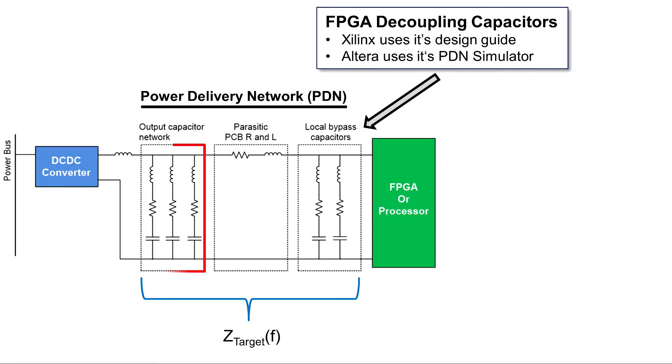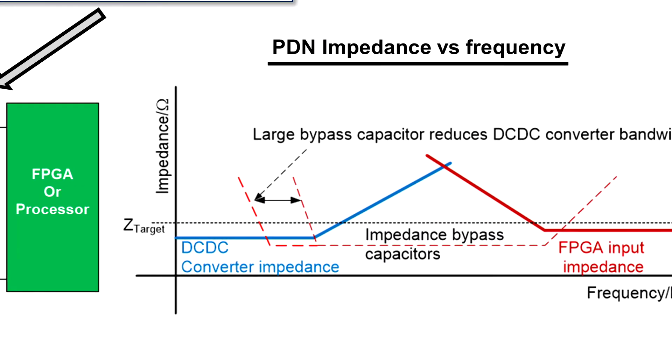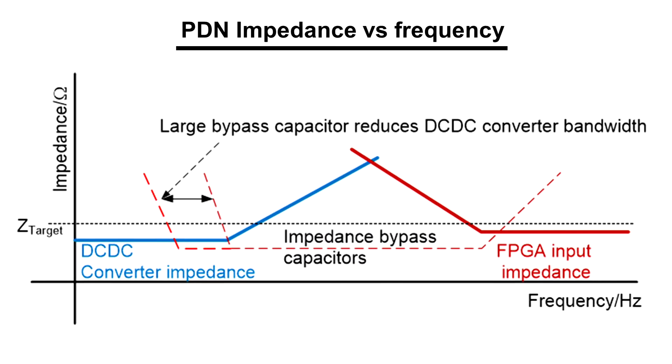So the DC-DC converter has an output capacitor network with all the parasitics just like the local bypass and high frequency decoupling capacitors. We also have a PCB trace resistance and inductance. So when we look at the frequency domain we can see that we need to meet a certain target impedance in order to meet our load transient response requirement.